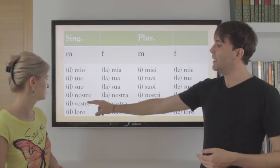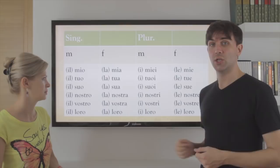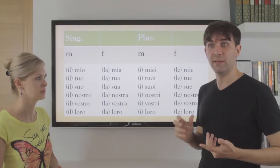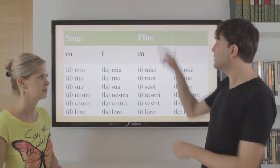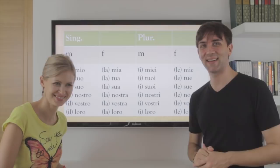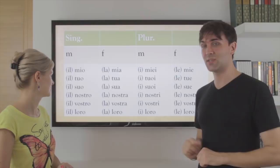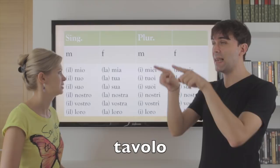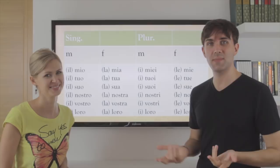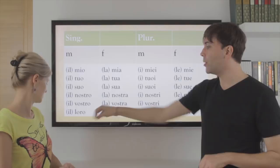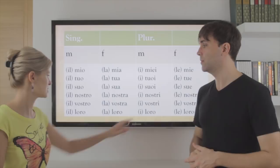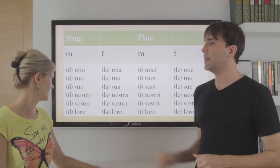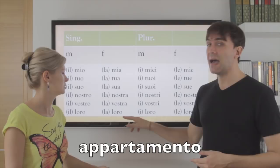Il nostro, la nostra. Il nostro bicchiere, la nostra TV. Il vostro, la vostra. Il vostro tavolo, la vostra bambina. Il loro, la loro — and loro doesn't change; it doesn't change in the plural either. Il loro appartamento, la loro villa.